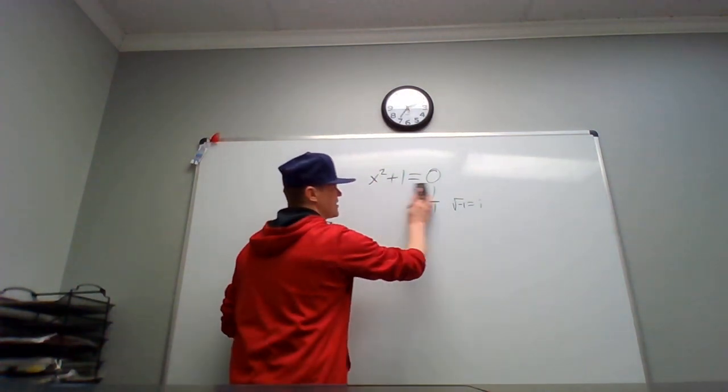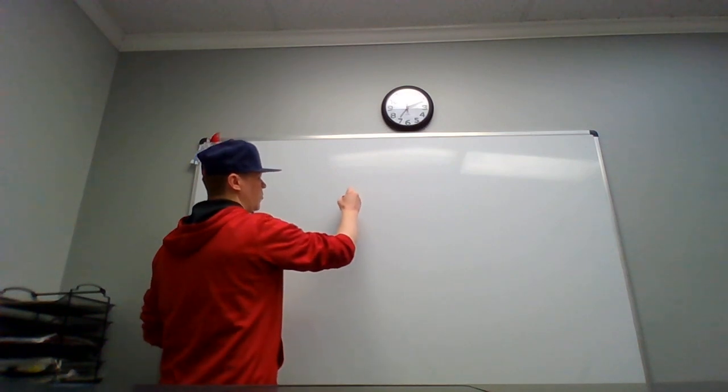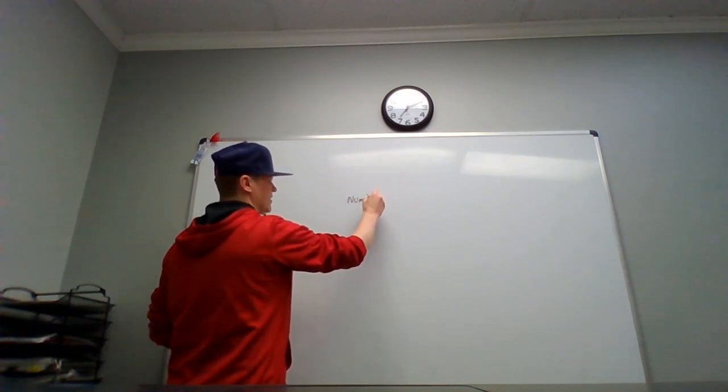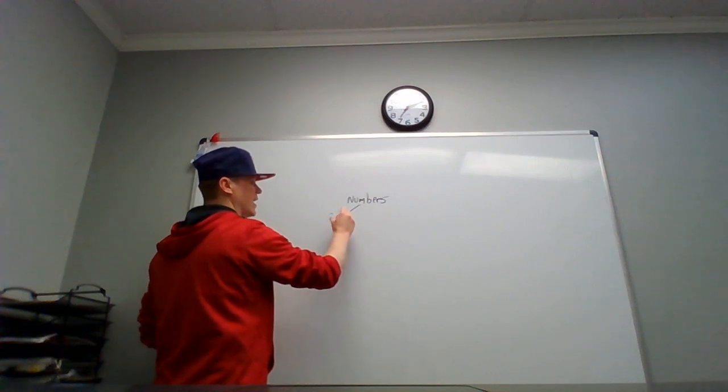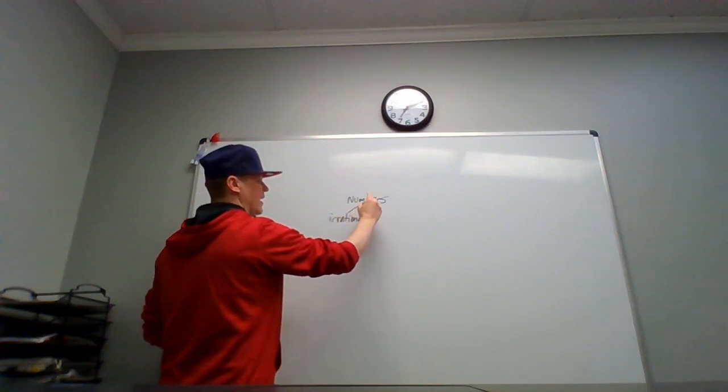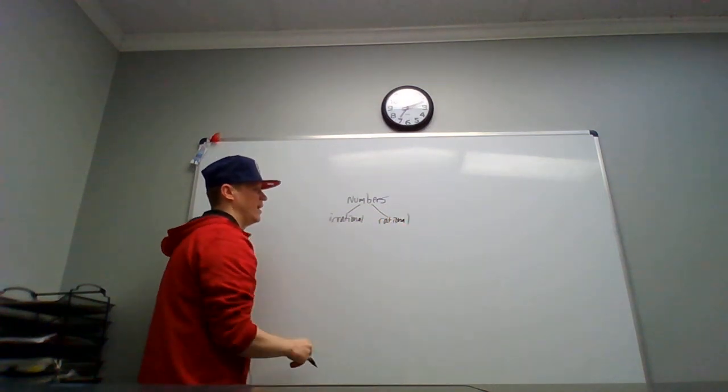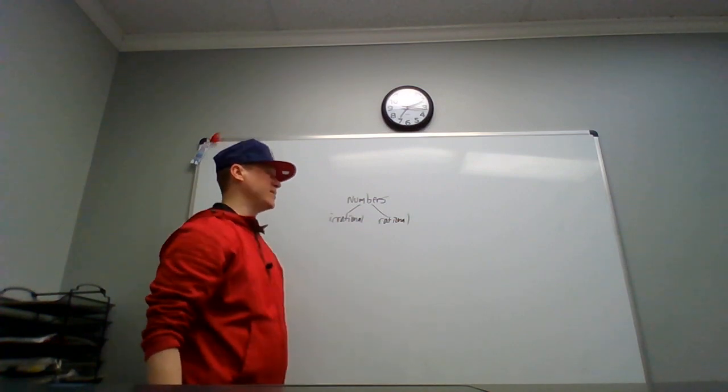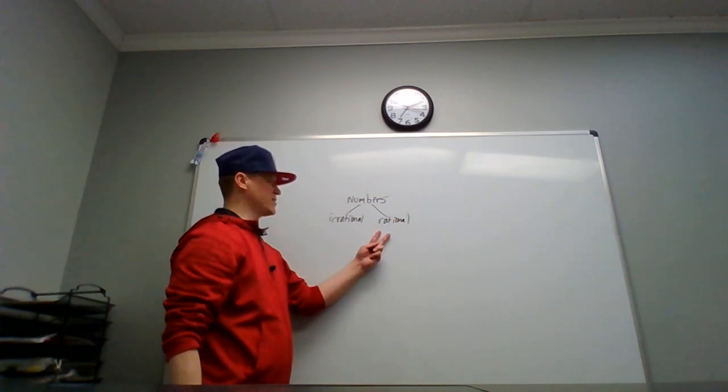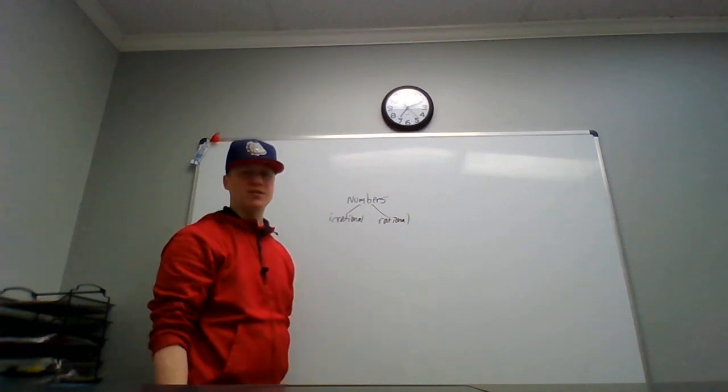So let's look at the history of numbers before imaginary numbers. We had just numbers and there were two categories: there was irrational numbers and rational numbers, and that was it. Rational was discovered first, of course. Irrational came later. At first, many people thought only rational numbers existed.